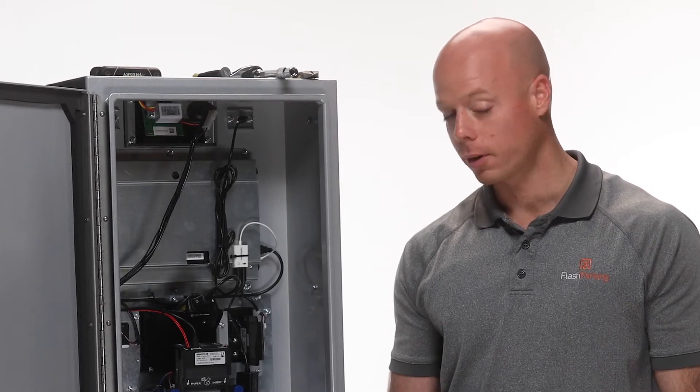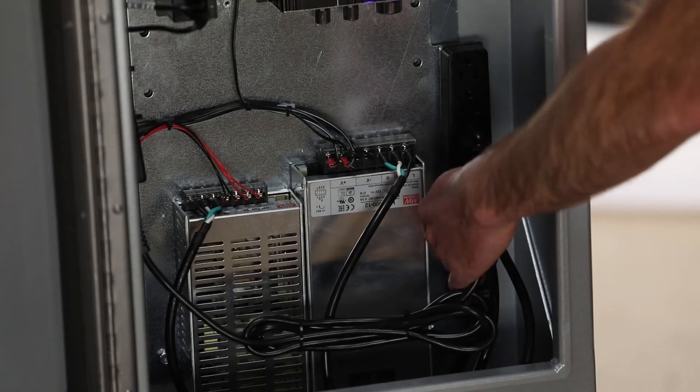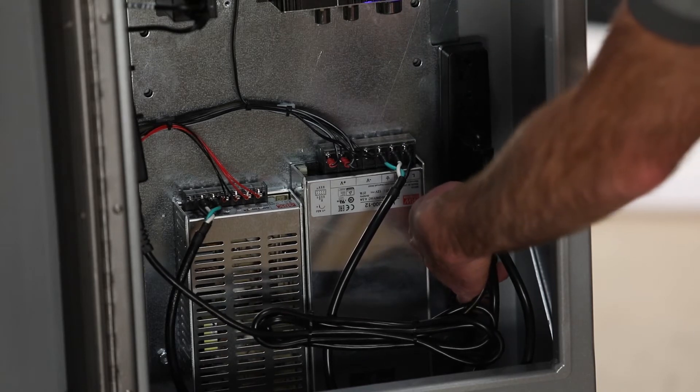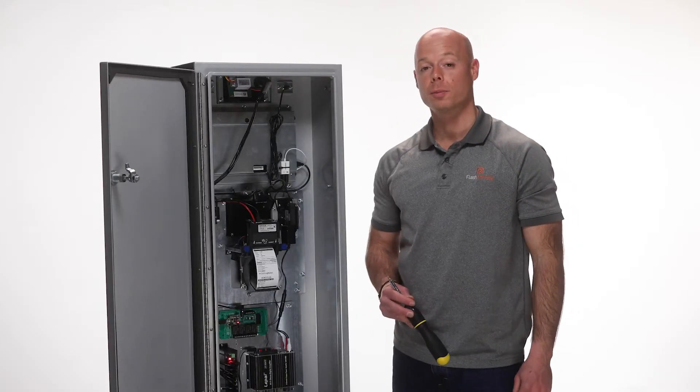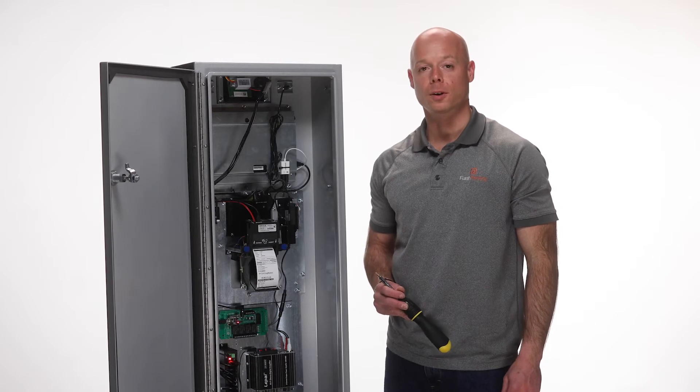The last step is to turn your power strip back on. And that's how you replace your USB hub in your Flashpark smart station.